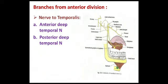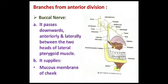The nerve to temporalis, as the name denotes, supplies the temporalis muscle. It has both anterior and posterior branches, which lie deep to the temporalis to supply the muscle from its deeper surface. The sensory component arising from the anterior division is the buccal nerve. It passes downwards, anteriorly and laterally, between the two heads of the lateral pterygoid muscle, and then supplies the mucous membrane of the cheek.